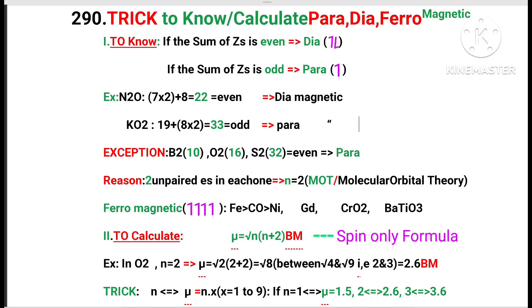Second, to calculate. The spin-only formula to calculate magnetism is μ equals square root n(n+2) BM. Example: in O2, unpaired electrons equals 2, μ equals square root 2(2+2).